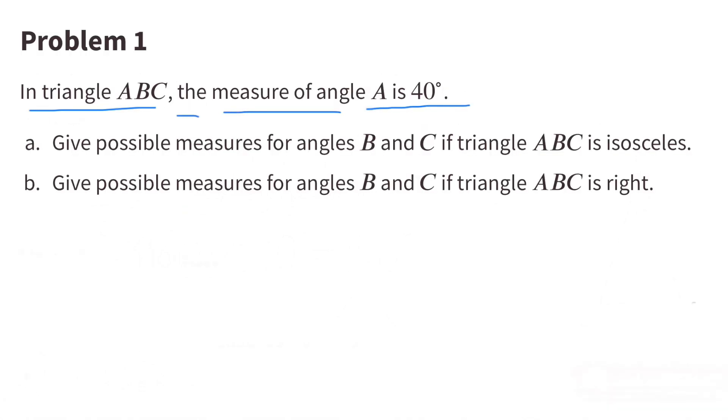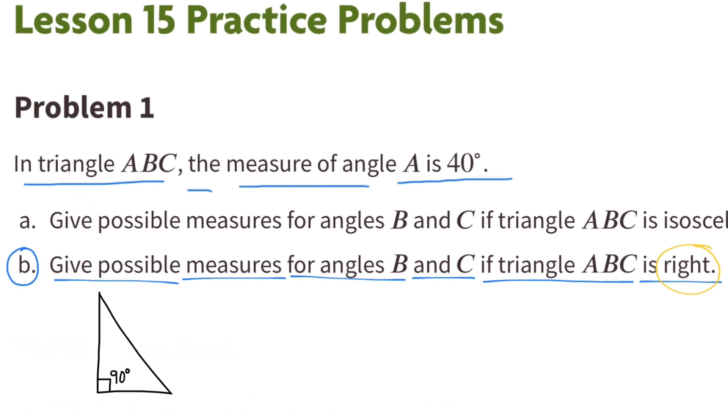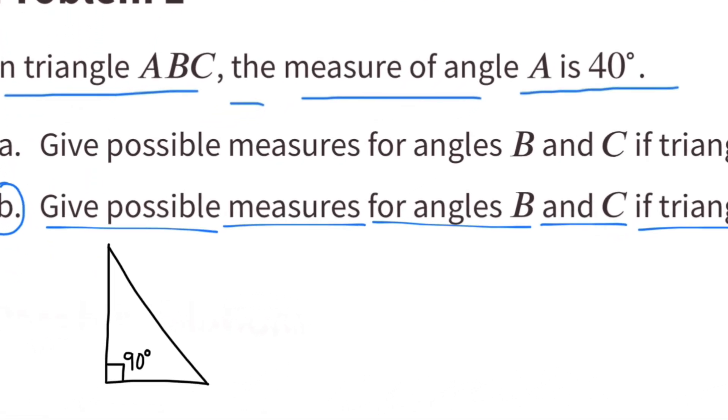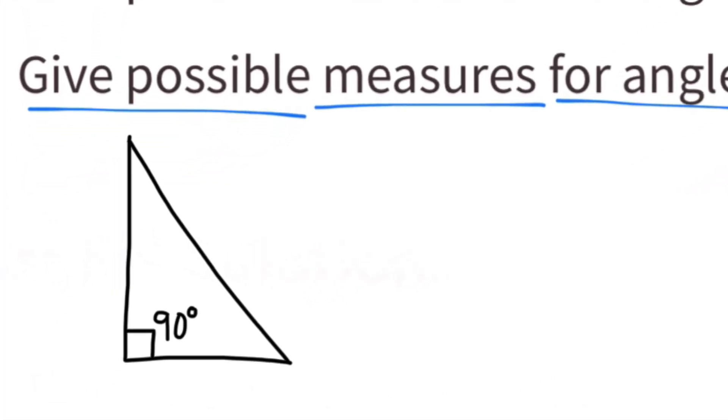B. Give possible measures for angles B and C if triangle ABC is a right triangle. So in this scenario, the triangle is a right triangle. Here's an example of a right triangle. One of the angles in the right triangle has a measure of 90 degrees.